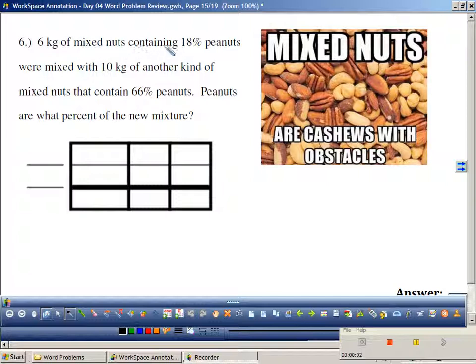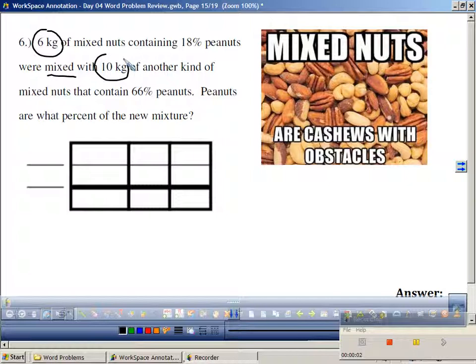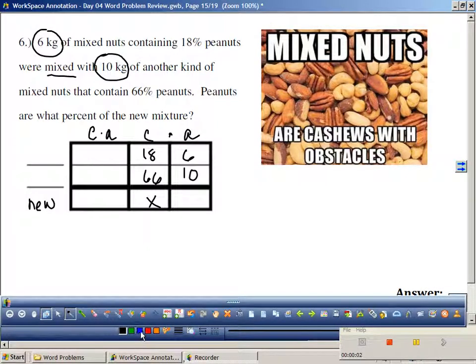6 kilograms of mixed nuts containing 18% were mixed with 10. The 6 has 18% and the 10 has 66%. Peanuts are what percent of the new mixture? And you guys can multiply this across and total it.